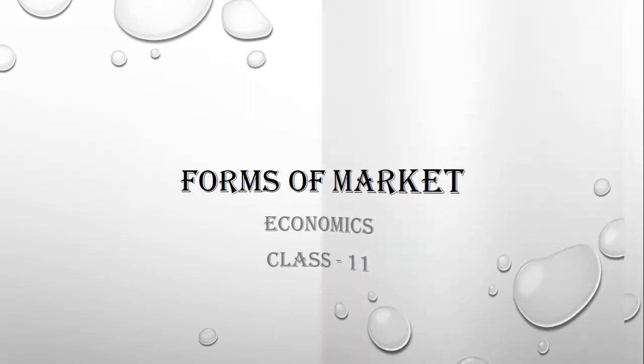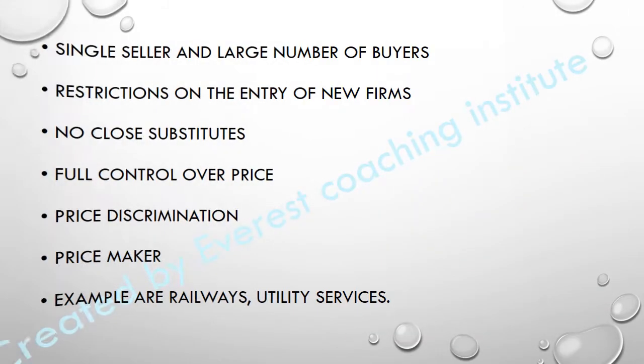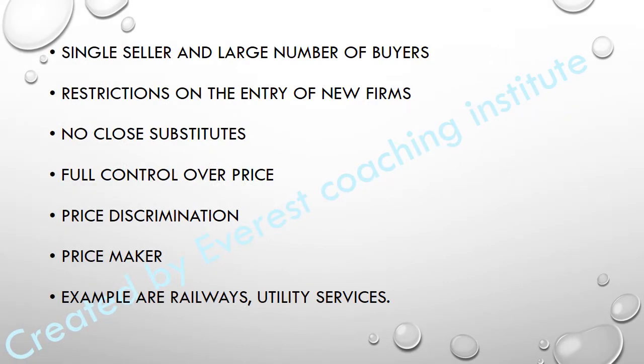Now we will discuss monopoly. What is monopoly? Monopoly is where we have a single seller and a large number of buyers. There is only one seller and there are a large number of buyers. When there is one seller and many buyers, then monopoly is created.